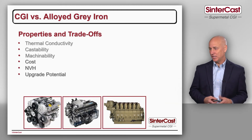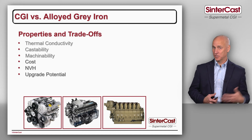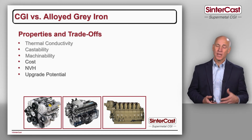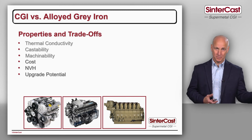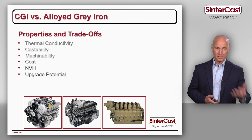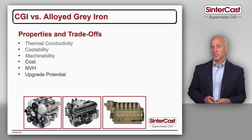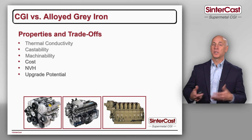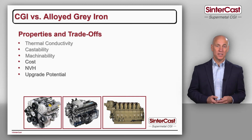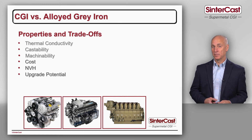So we've now looked at thermal conductivity, castability, and machinability. When we add alloying elements, we of course increase the cost because we have to pay for those alloying elements. On NVH — as we saw in our engine design benefits video, video three in our series — because of the higher stiffness of CGI, we have better vibration damping and less noise generation. Alloyed grey iron stiffness only increases by about 10%, whereas in CGI the stiffness increases by 50%, giving a much higher NVH benefit. The increase in strength of about 20% for alloyed grey cast iron might be enough for current performance and durability requirements, but it doesn't really offer any upgrade potential.